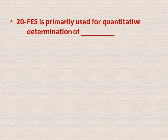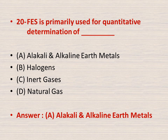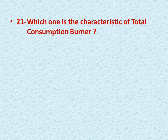Question number twenty: flame emission spectroscopy is primarily used for quantitative determination of dash. Options: A is alkali and alkaline earth metals, B is halogens, C is inert gases, D is natural gas. Flame emission spectroscopy is basically designed to quantitatively analyze alkali and alkaline earth metals, so A is the right answer.